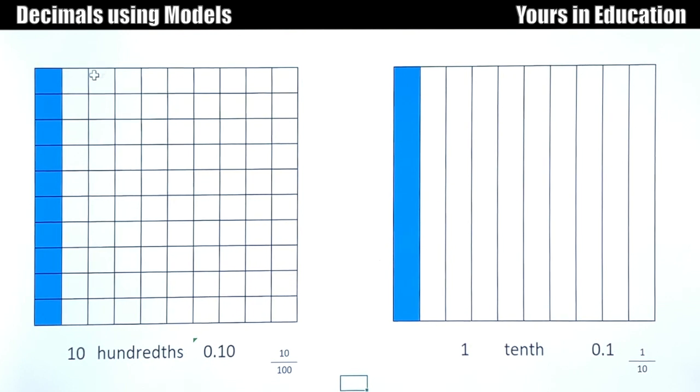Yes, they are equivalent. Ten hundredths, 10 out of 100, is equivalent to 1 out of 10. Even though they are equivalent in size, the models are different. So this is 10 out of 100 and this is 1 out of 10. Let's move on. I'm going to go a little bit faster. 13 hundredths, 18 hundredths.